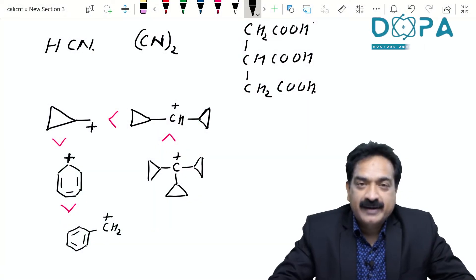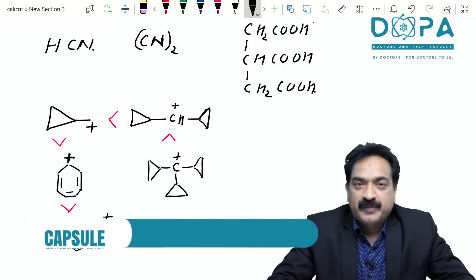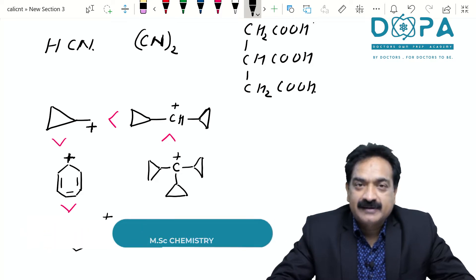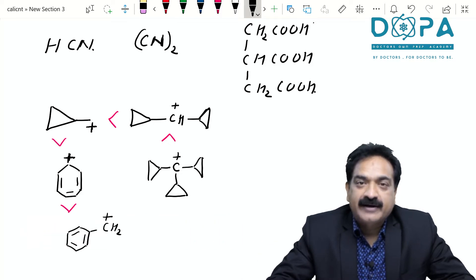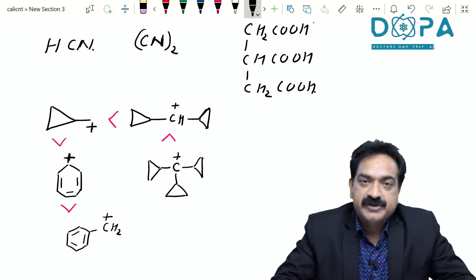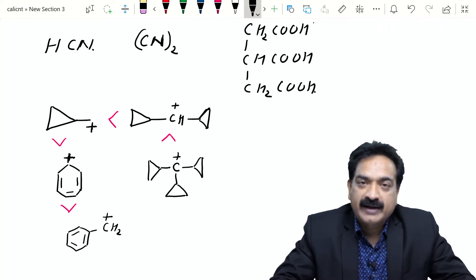Hi friends, this is Ramesh Manikar on behalf of DOPA. Do you know the IUPAC name of HCN? It is methane nitrile. Do you know what is the IUPAC name of cyanogen? That is ethane one two dinitrile.